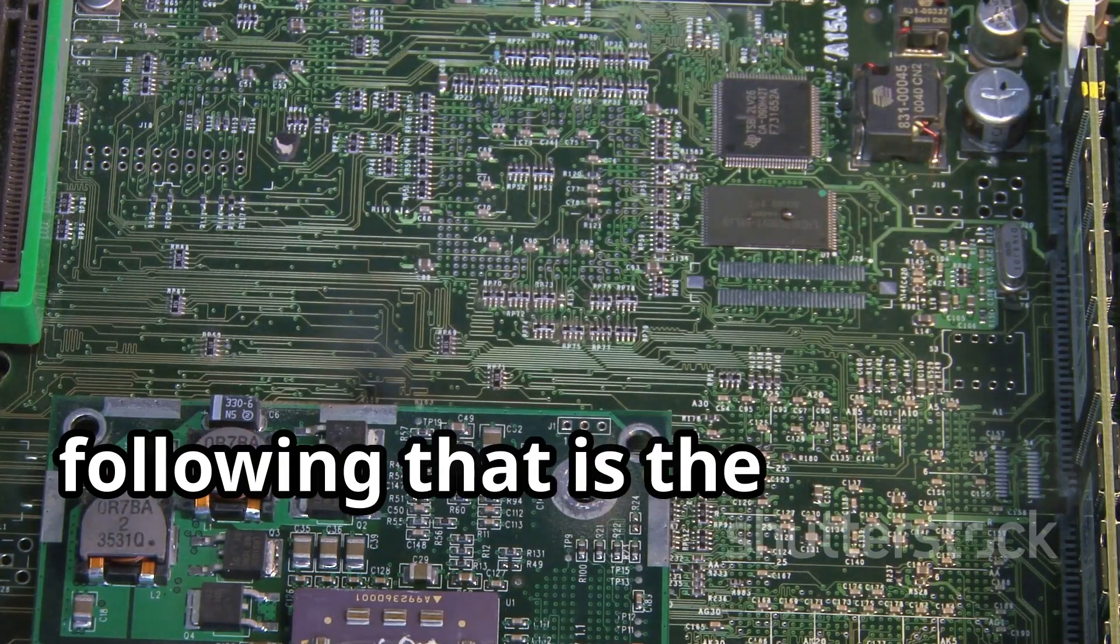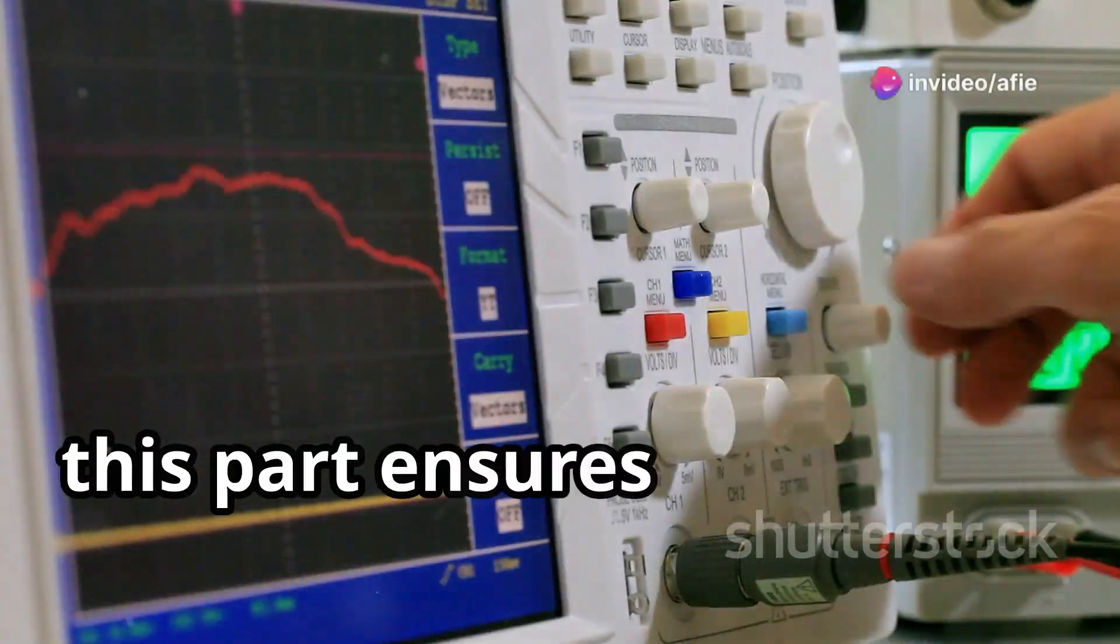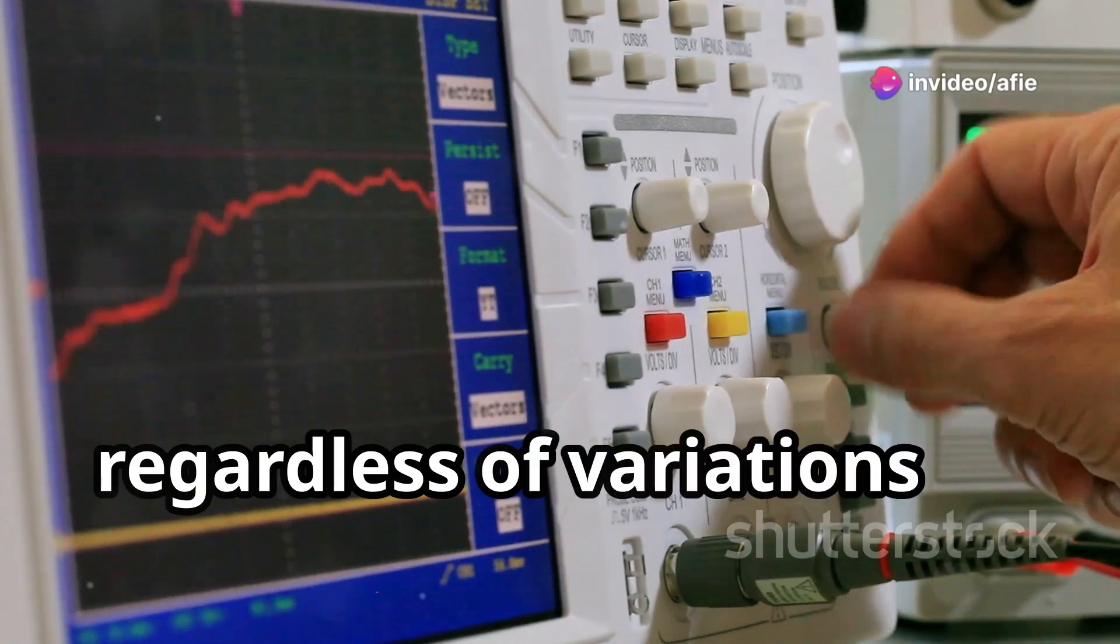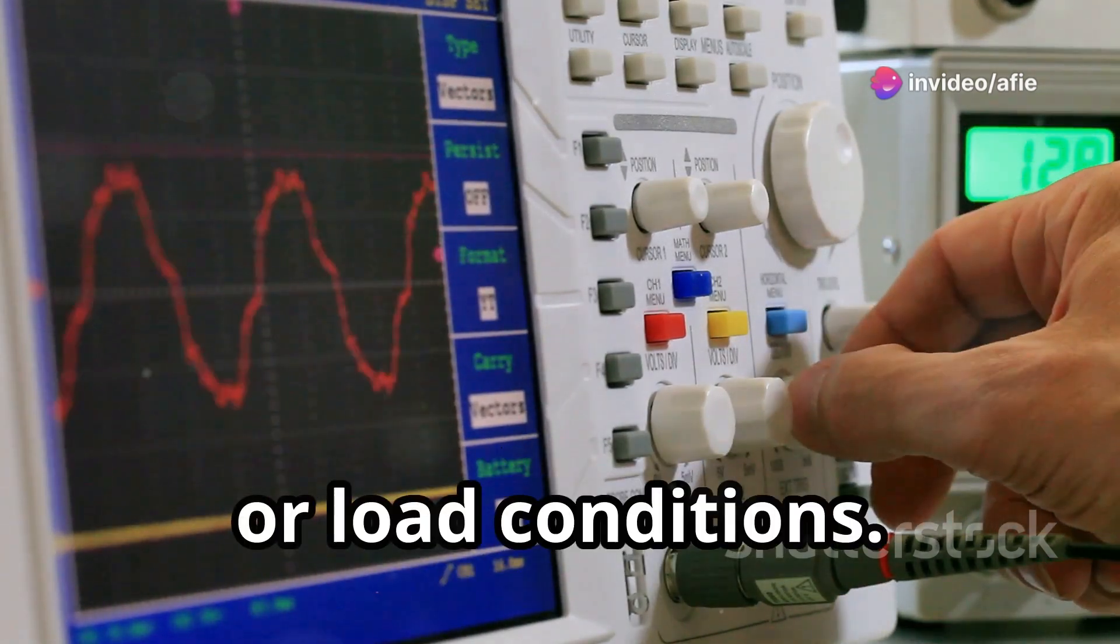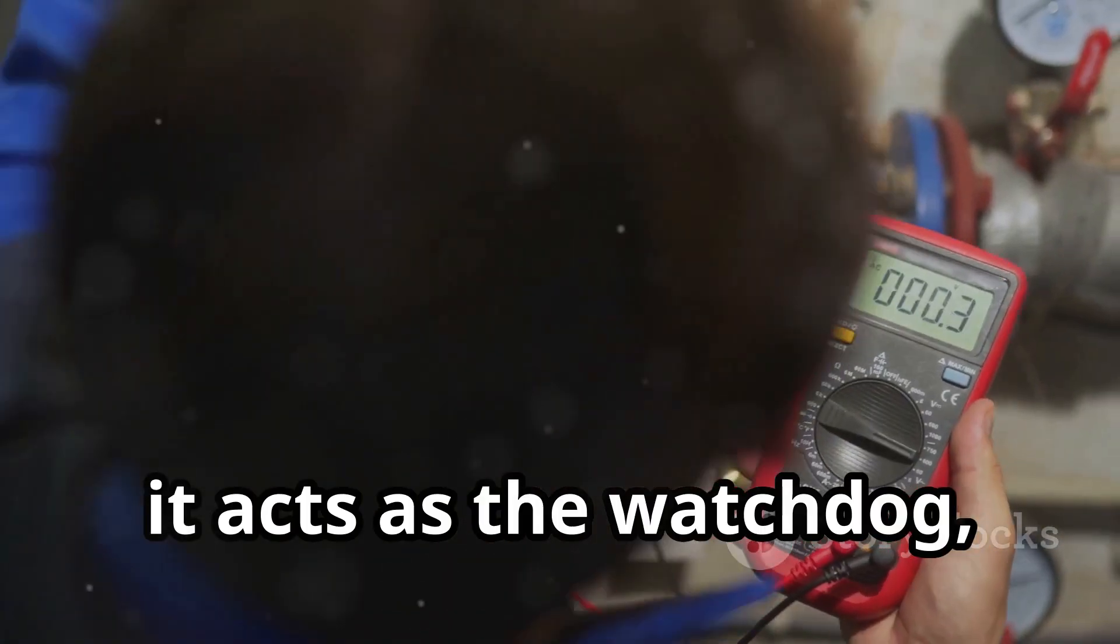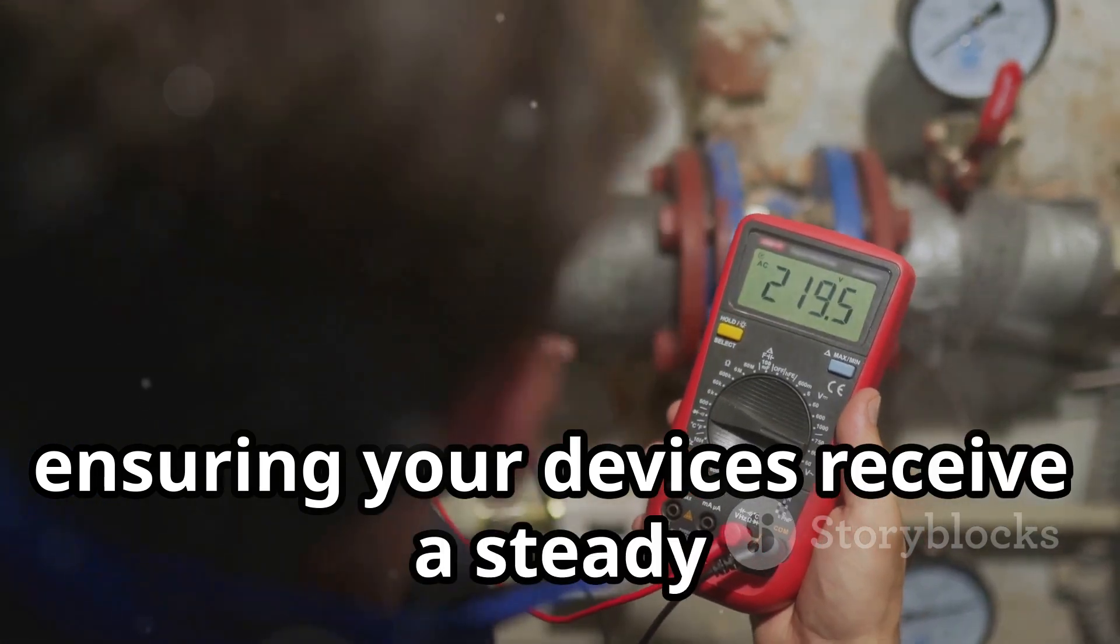Following that is the voltage regulator. This part ensures a constant output voltage, regardless of variations in input voltage or load conditions. It acts as the watchdog, ensuring your devices receive a steady power supply.